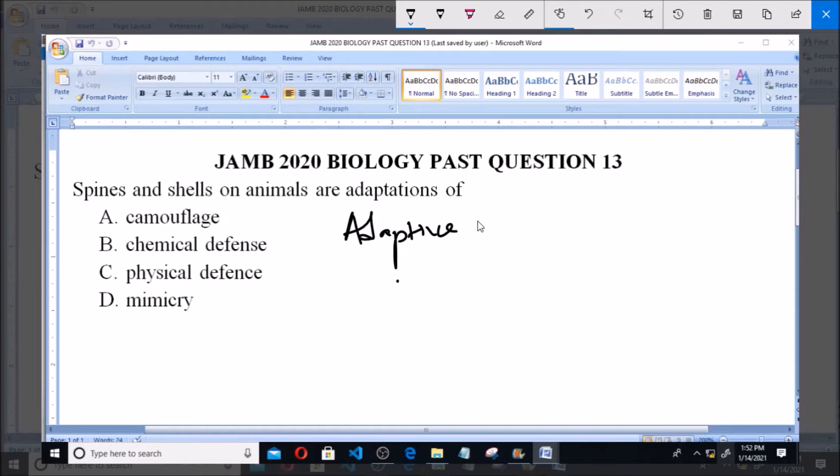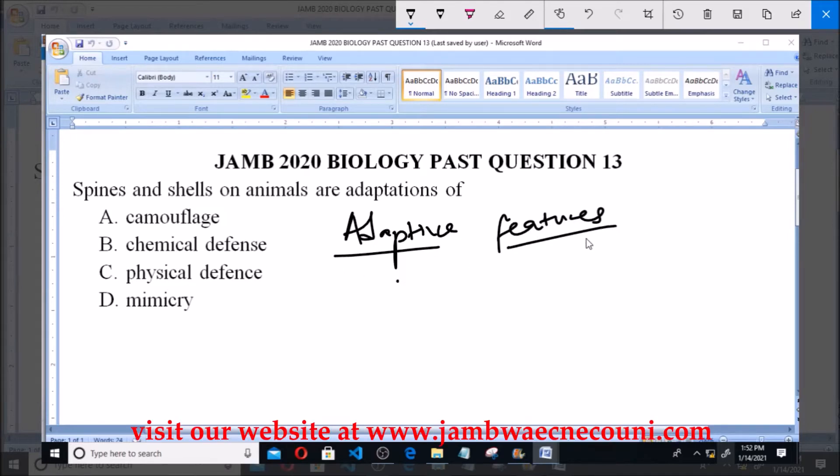These are features that enable them to survive in a particular environment. We call this adaptation. Now, this adaptation depends on the environment in which they find themselves. For animals that possess spine and shells...